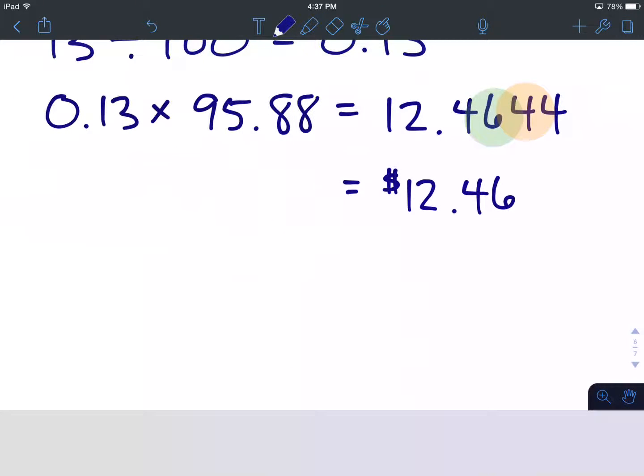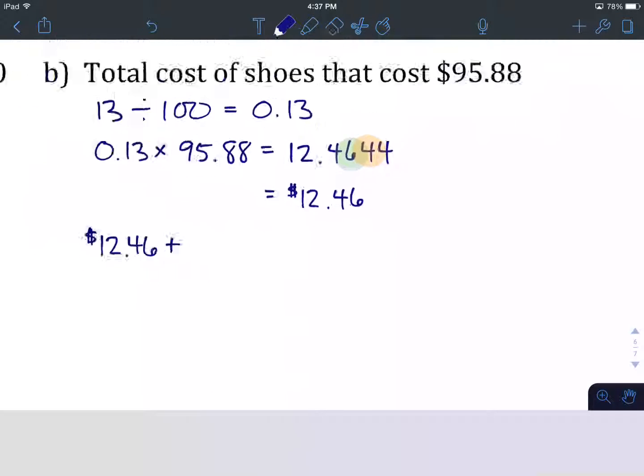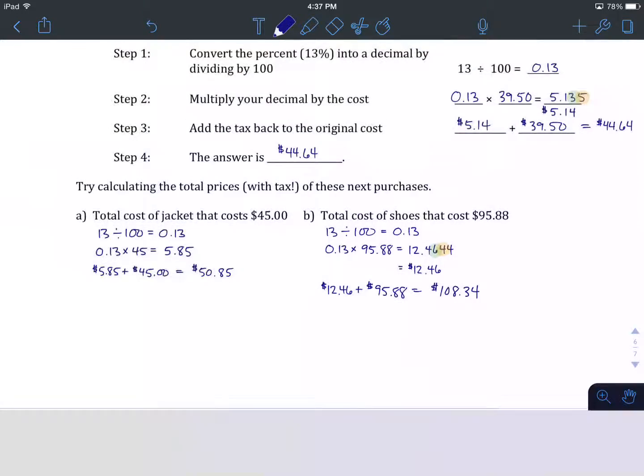Last step now is to take our HST, which is $12.46, and add it back to the cost of the shoes. And that was $95.88. When we add those two together, $12.46 plus $95.88, we get $108.34 for a beautiful pair of shoes.